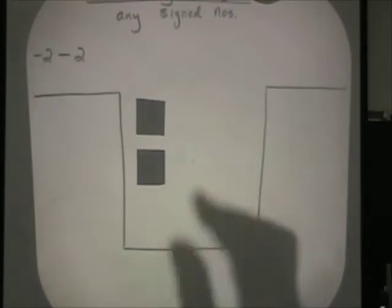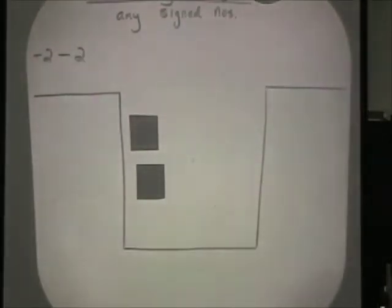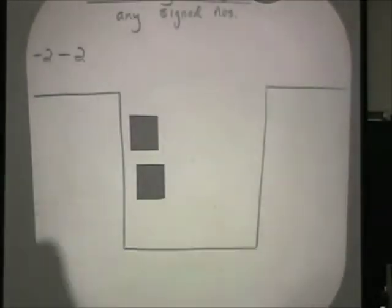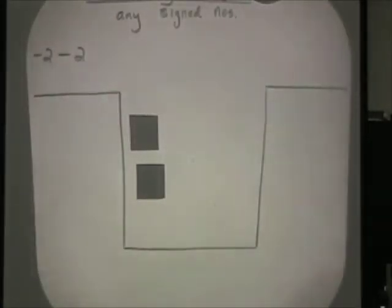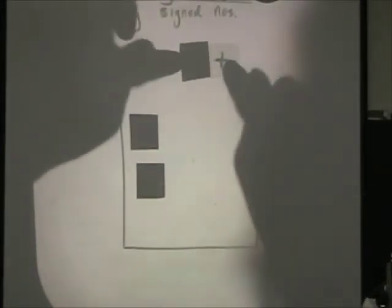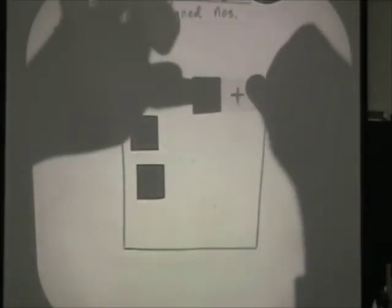So in the pit right now we have two negatives, represented by these black squares. Now it's time to try and remove two positives, but there aren't any positives in the pit. So how are we going to remove them? I've got to find a way to get some positives into the pit so that we can remove them, but we can't change what's in the pit.